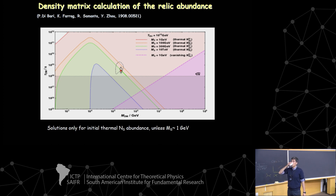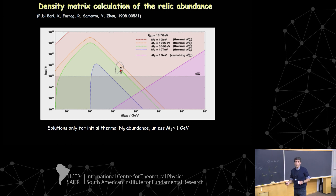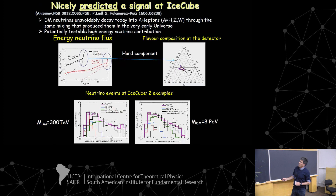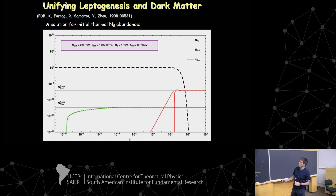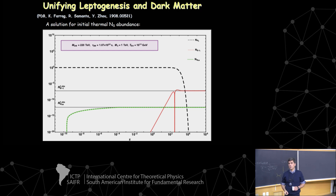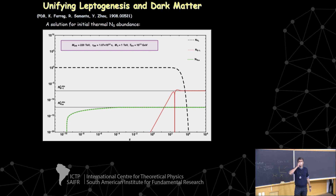Question: From your last slides, is dark matter produced non-resonantly? Answer: Yes, it belongs to the category of freeze-in solutions — it starts from zero abundance, is produced with small coupling, and you get the final abundance. The lepton asymmetry, however, is produced resonantly.